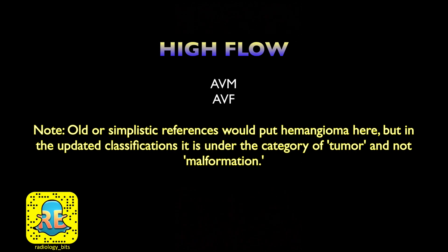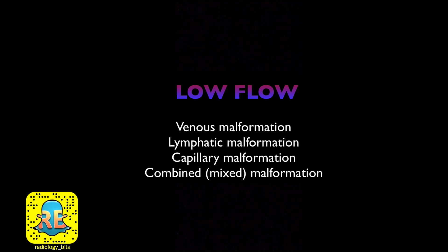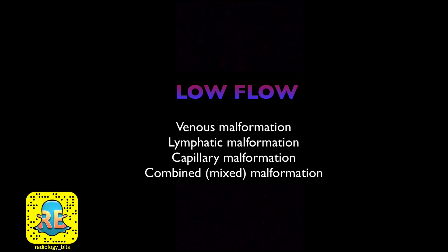The slow-flow categories of vascular malformation include venous malformation, lymphatic malformation, capillary malformation, or a combination such as a venolymphatic malformation. The most imaging-relevant ones where radiologists play an important role are venous and lymphatic malformations. Capillary malformation is the classic birthmark — what we typically call a port-wine stain or nevus. Let's concentrate on the venous and lymphatic types.